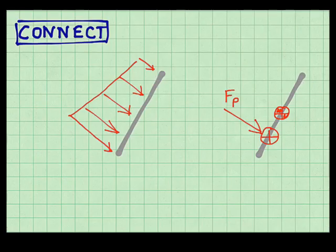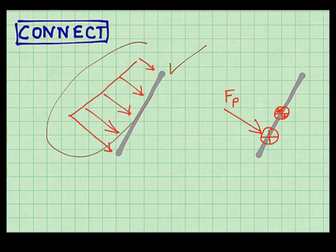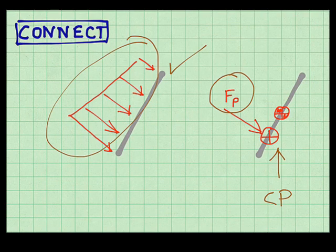Let me sketch that. Here's the window in side view. Here's the pressure distribution, and this is linear. It's called a hydrostatic pressure distribution. So I'm going to replace this distributed stress with an equivalent force, the pressure force, which acts at the center of pressure, which is going to be located below the center of gravity, or the centroid of area of the plate. Those are equivalent in this case.